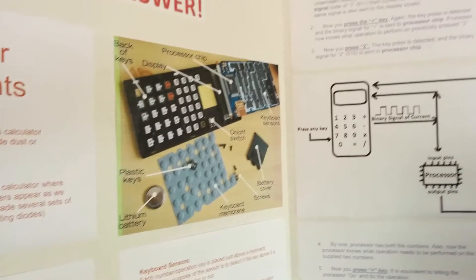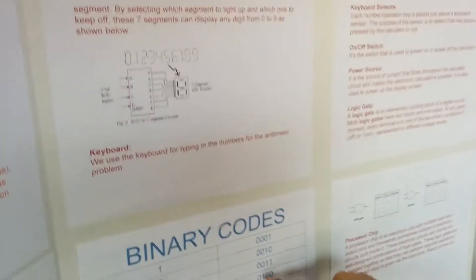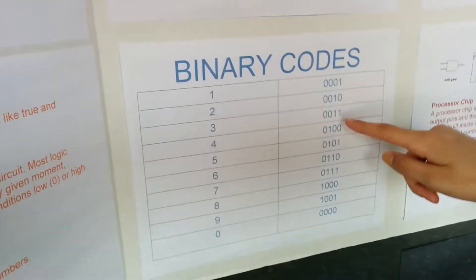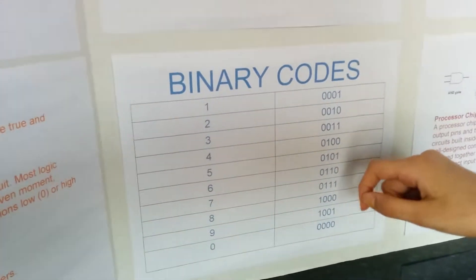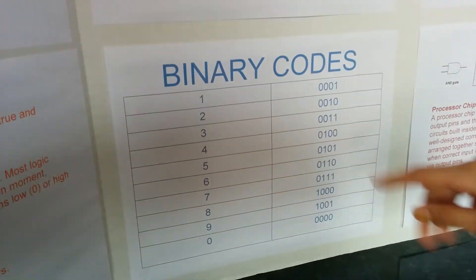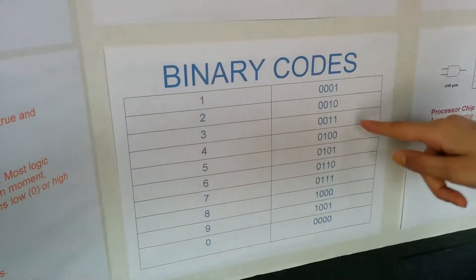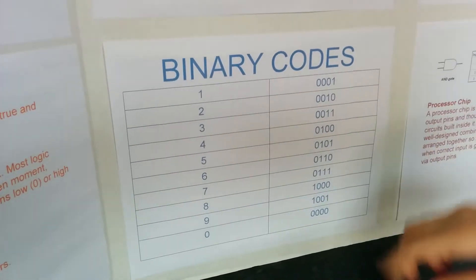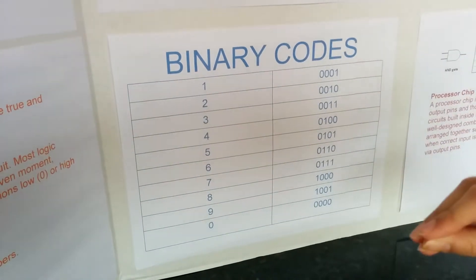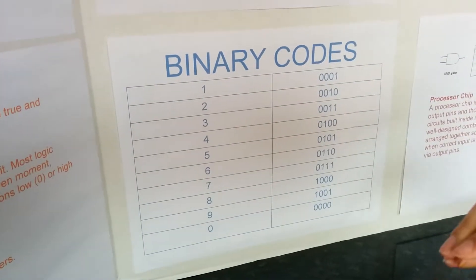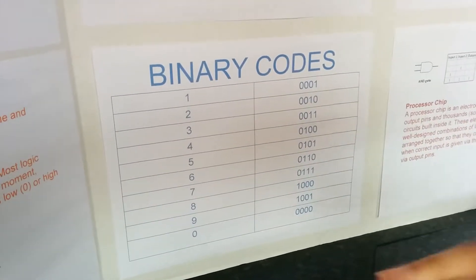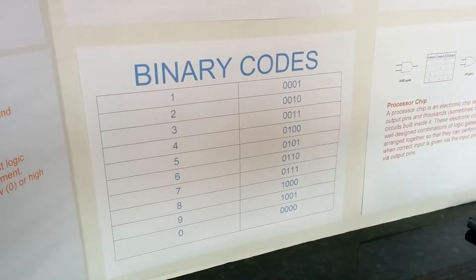For example, if the current wants to show three, that's zero, zero, zero, one, one. It'll do: no current, no current, flowing current, flowing current.